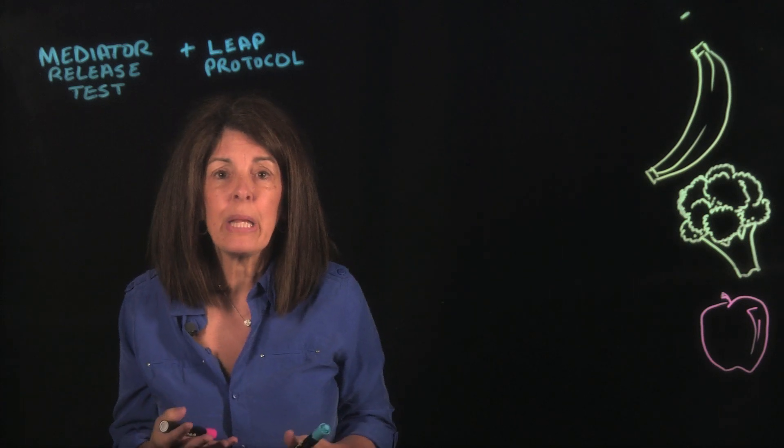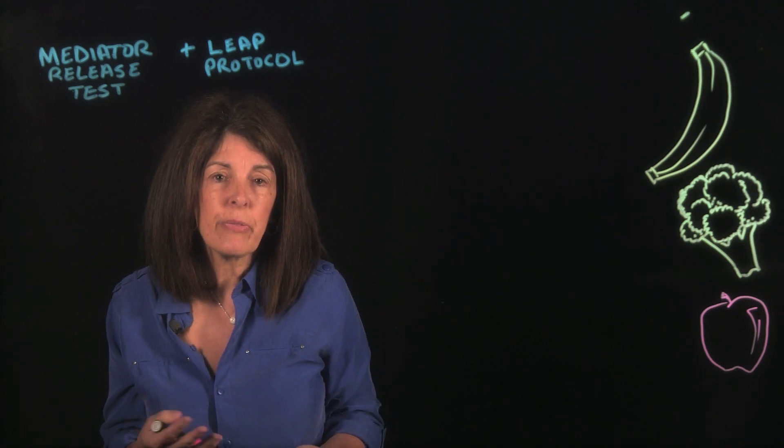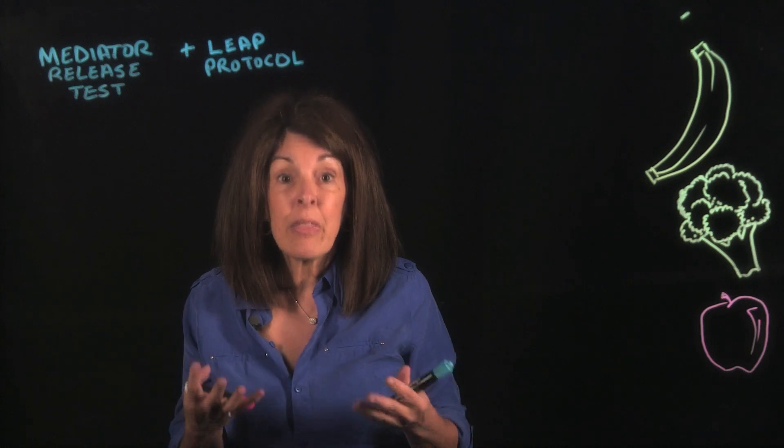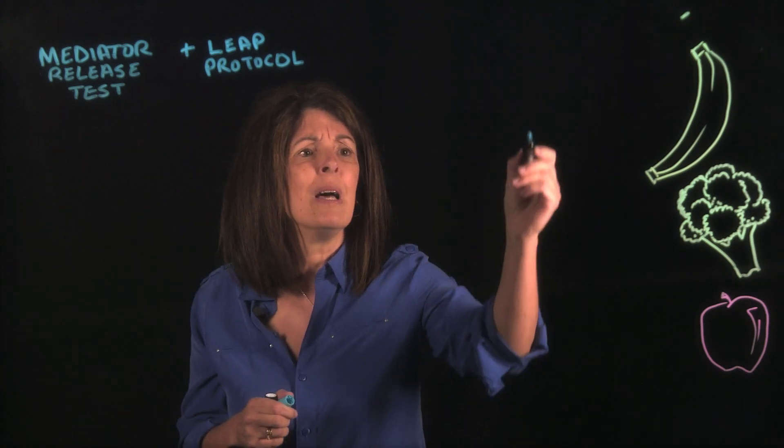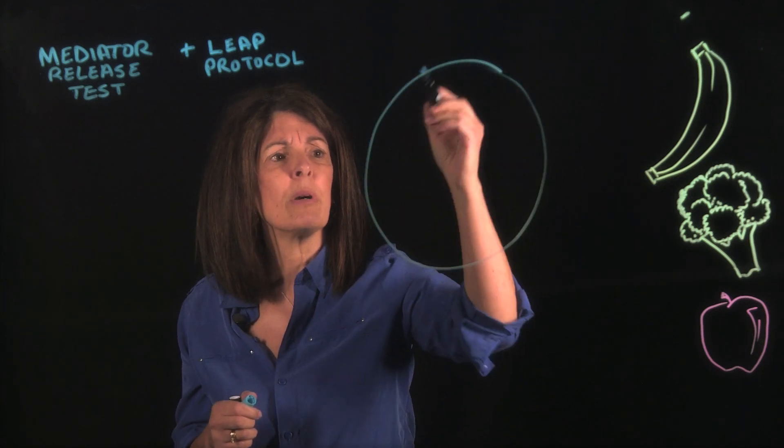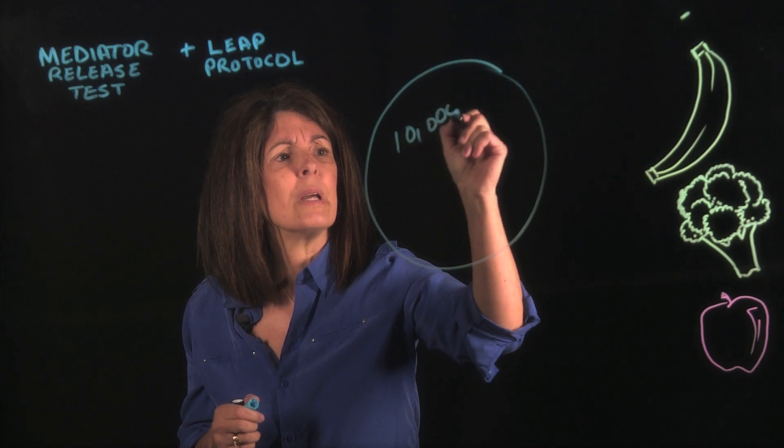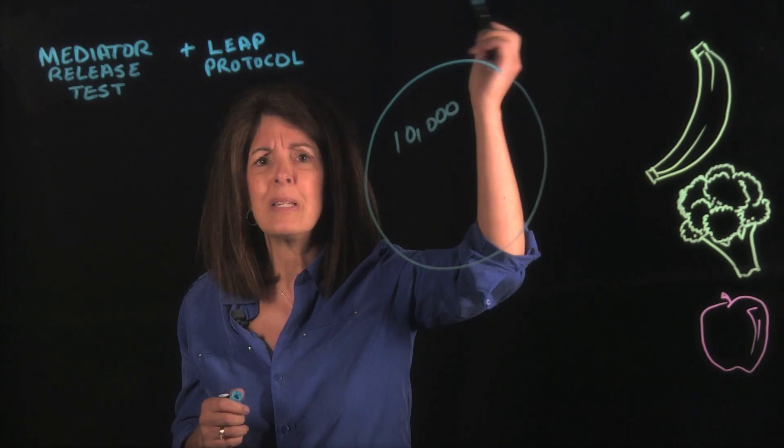There is no test on the planet that's ever going to be large enough to identify the 10,000 chemicals in our food supply and the thousands of foods. There is a huge amount of foods and chemicals in our food supply, 10,000 plus.